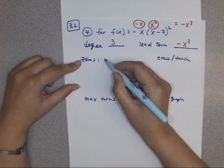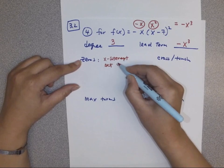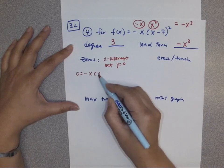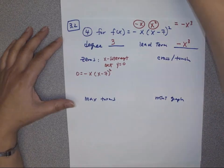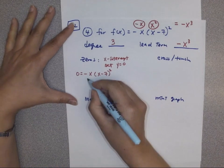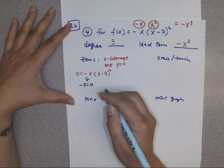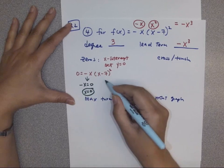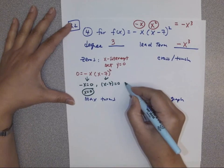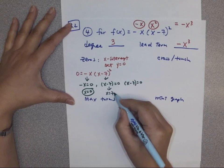Zeros basically mean x-intercepts. To find them, set y equal to zero: 0 = negative x · (x − 7)². The first factor gives x = 0. The squared factor means x − 7 = 0 and another x − 7 = 0, both giving x = 7.